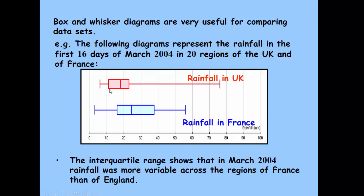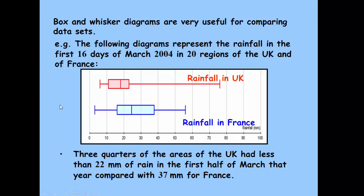We then compare the interquartile range to see how variable it is. And again, the UK here is less variable because the interquartile range is smaller. We could derive other stats from here, like for example, three quarters of the areas of the UK had less than 22 millimetres of rain going up to the upper quartile. And we can make the same comparison there with France, where it's less than 37 millimetres.